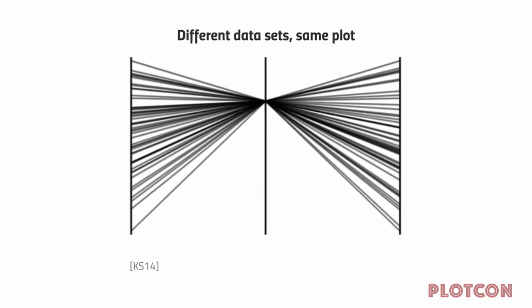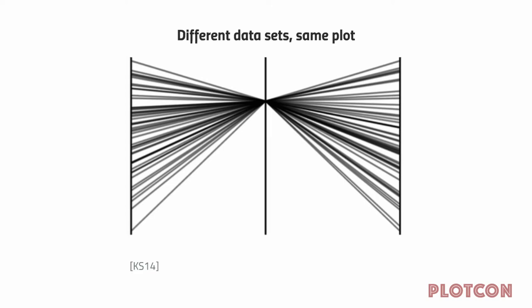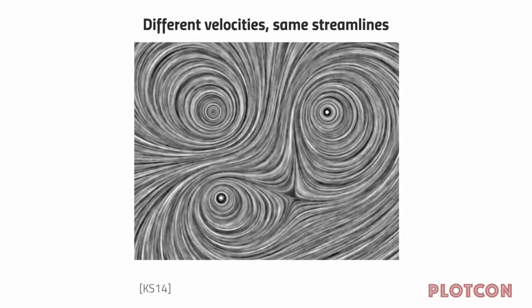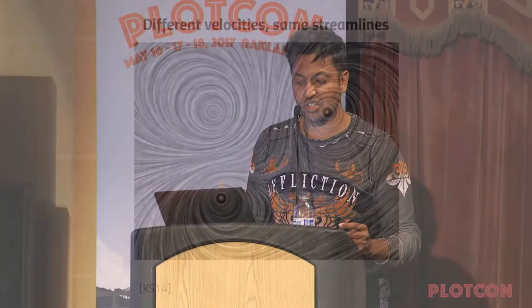A streamline visualization of a fluid simulation: if I double the velocities in this simulation, has the data changed? Absolutely. So it should produce a different visualization — it does not. This is confusion.